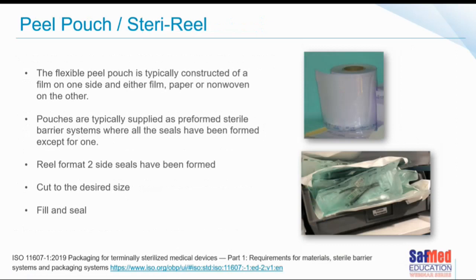A peel pouch or sterile reel is typically constructed of a film on one side and a paper or non-woven material on the other side. Pouches are supplied as pre-formed barriers where three of the seals have been formed, leaving one open. In reel format, two side seals have been formed — we then cut the reel to the desired length, fill the item, and seal the two ends.